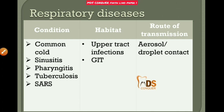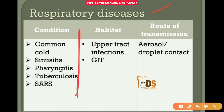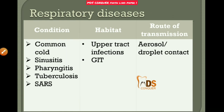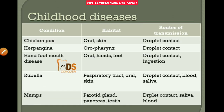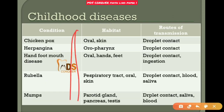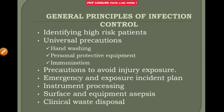For respiratory diseases, the common habitat is mostly the upper tract and GI infections, and the route of transmission is aerosol. For childhood infections, you can write these infections — their route of transmission is droplet contact. These are the common infections seen in the dental scenario.